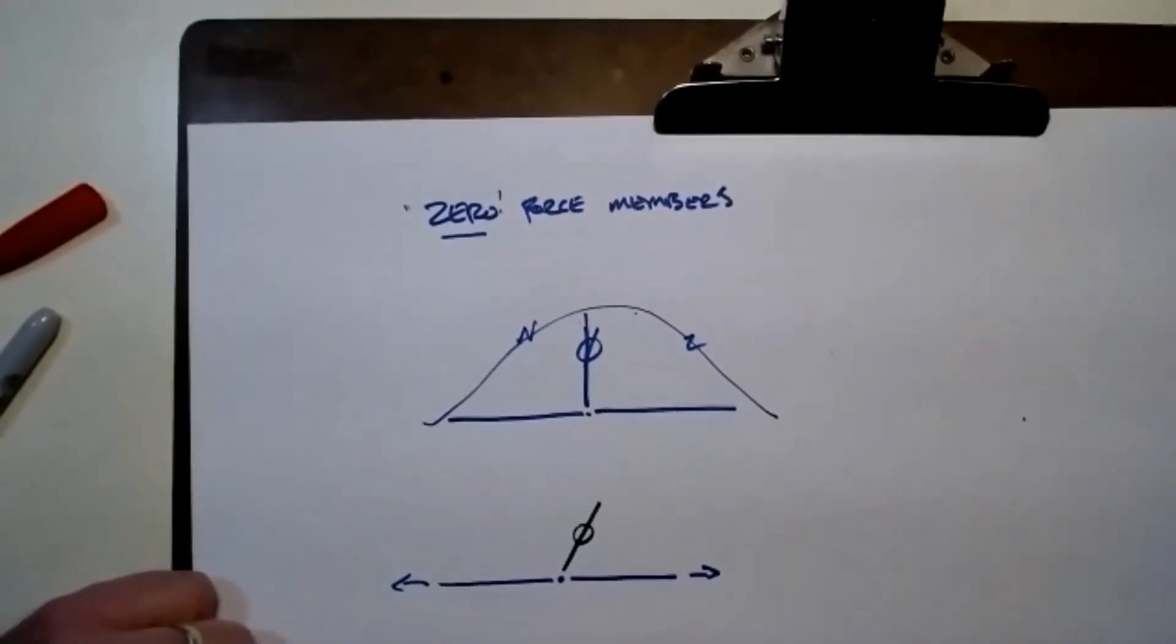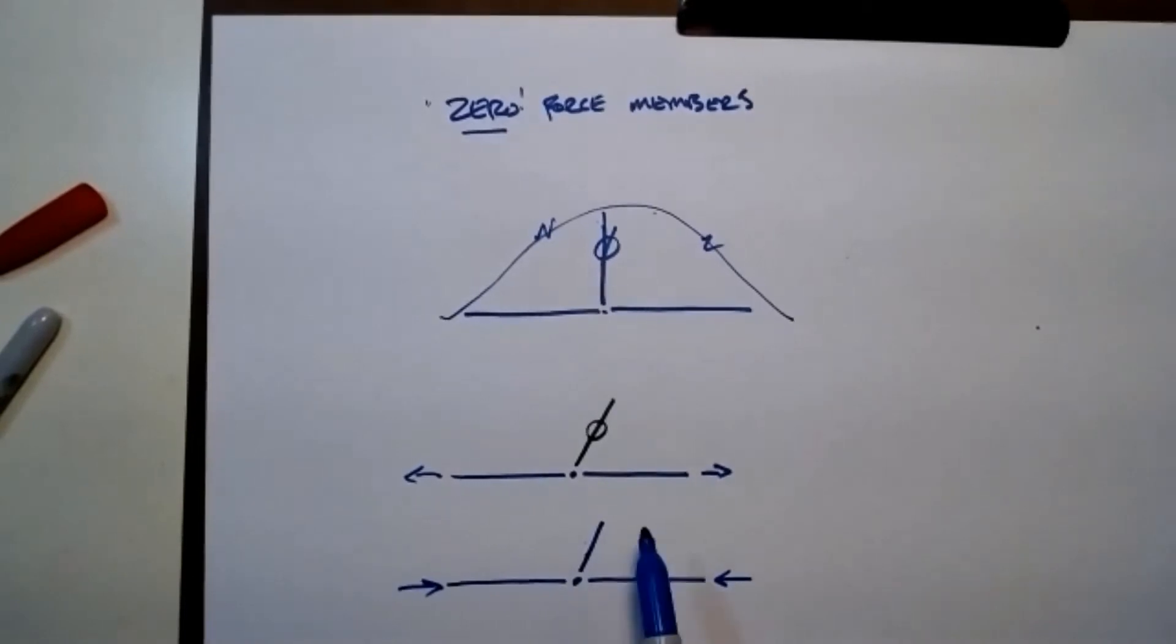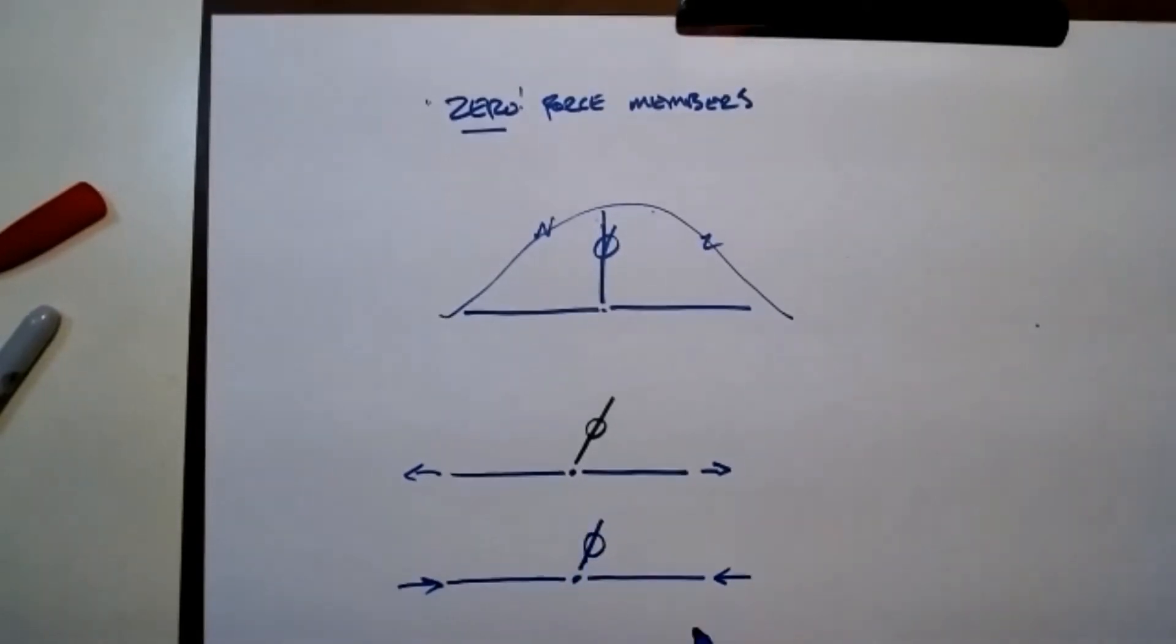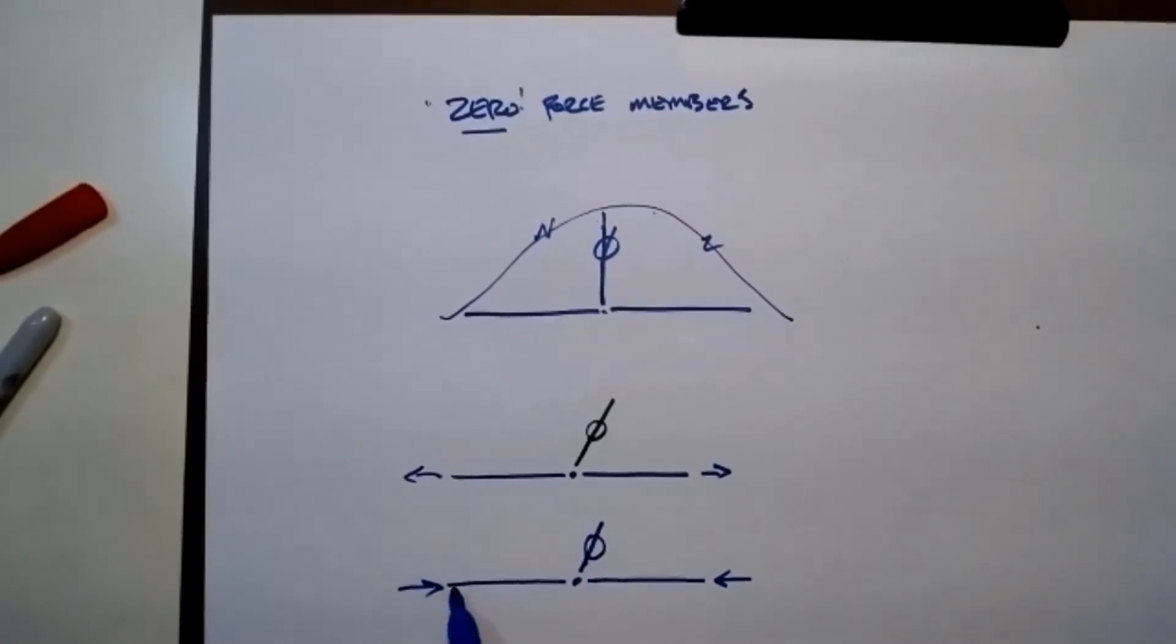Even if this member is in compression, you might want this member here for some sense of stability but for the small deflections and small movements that we're designing to, this member is essentially, if there's no load being applied at this joint, this member doesn't have any demand as long as these stay in straight alignment.